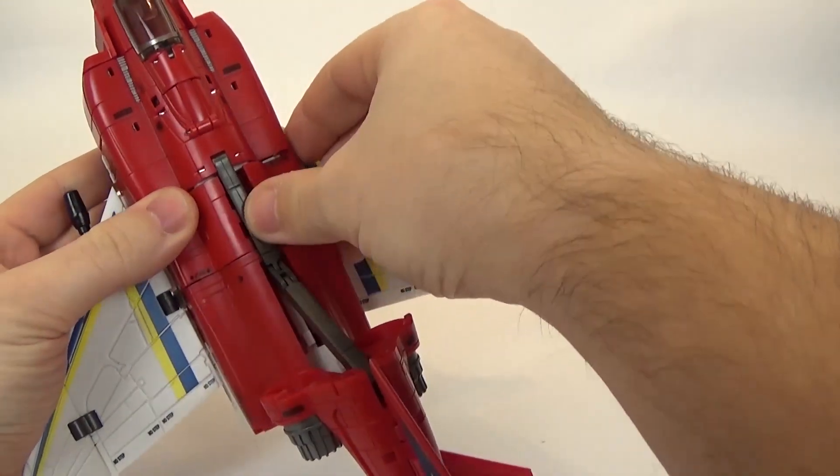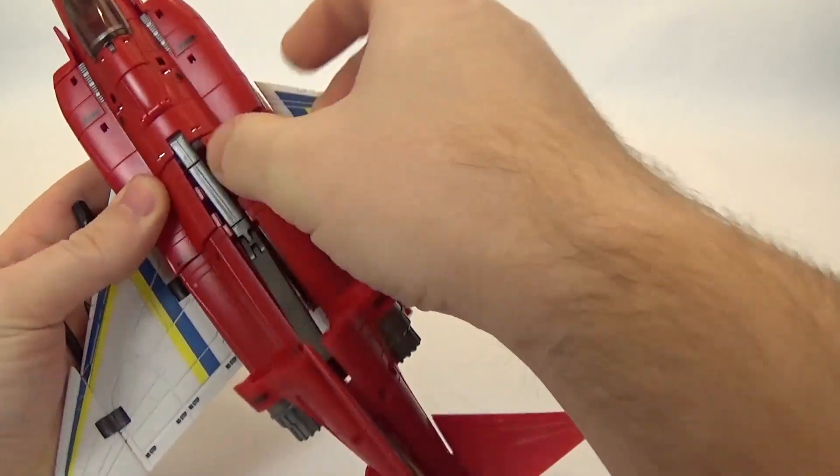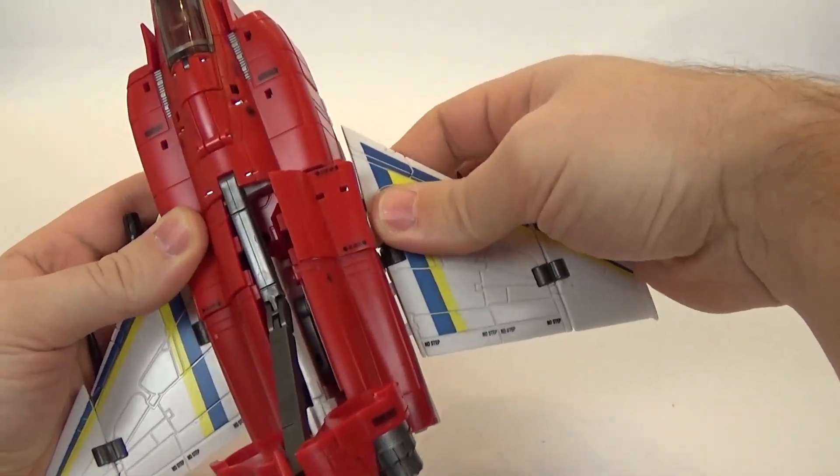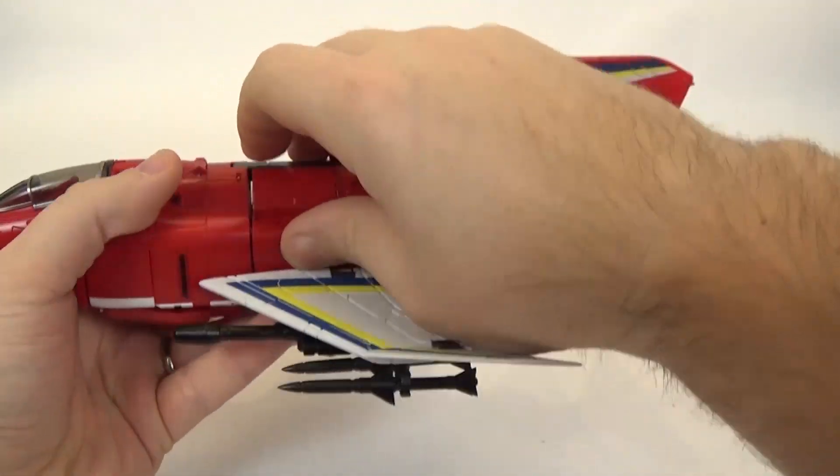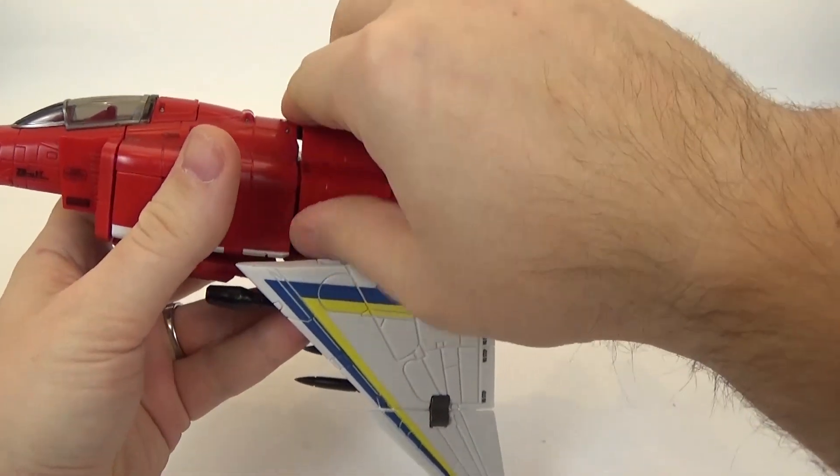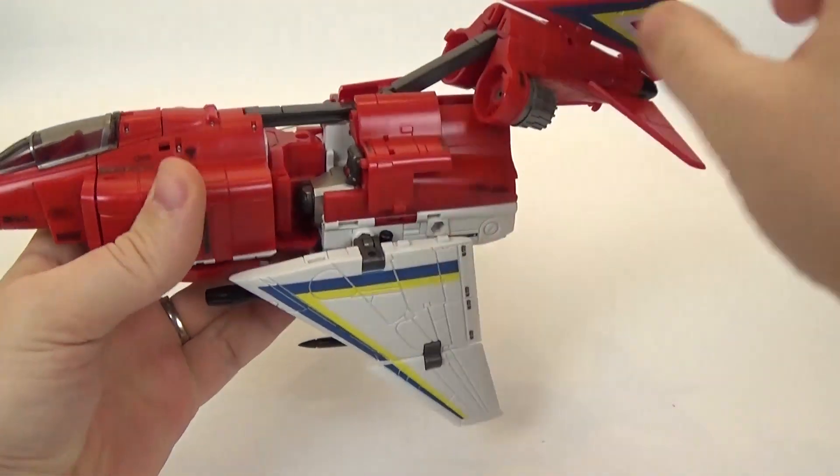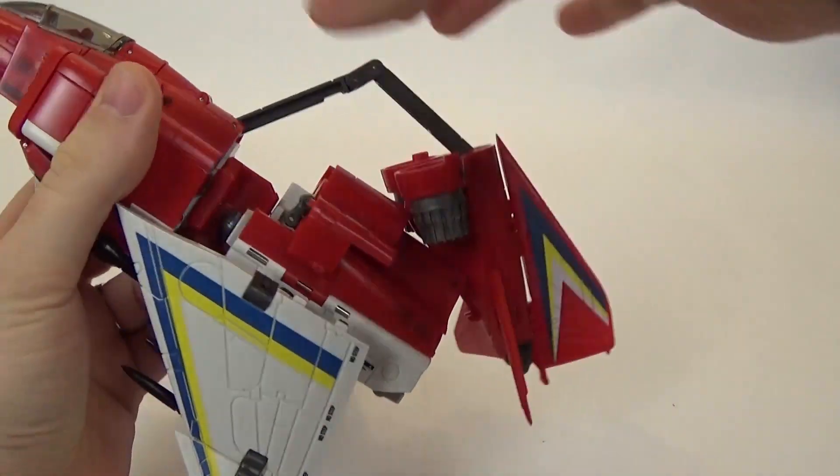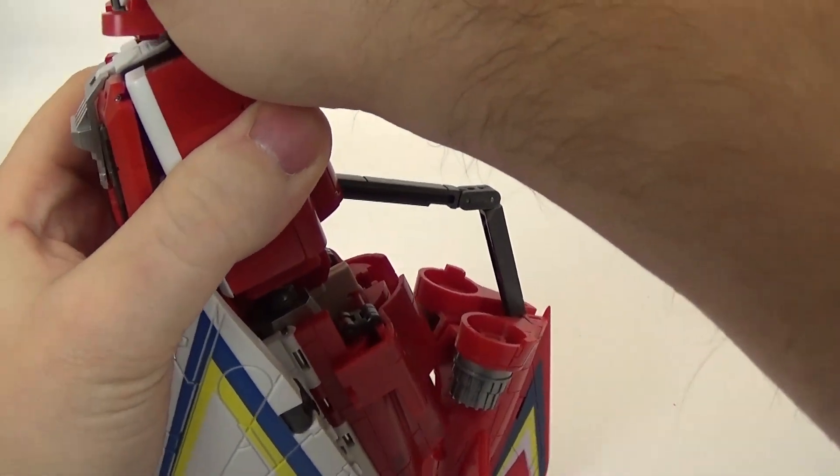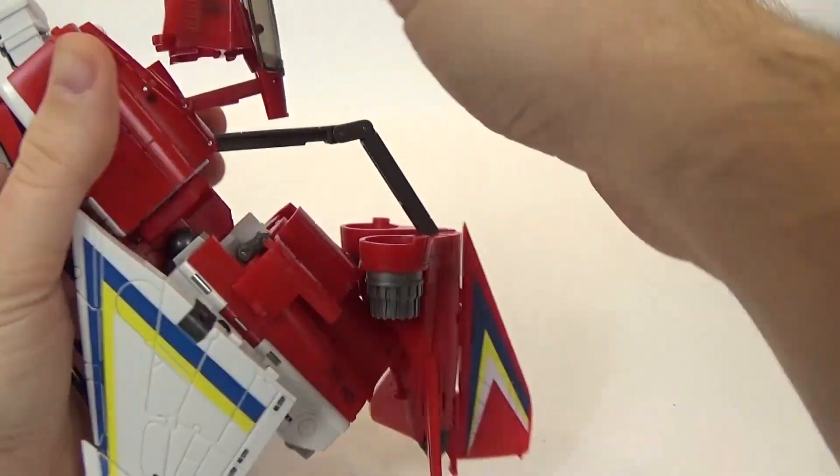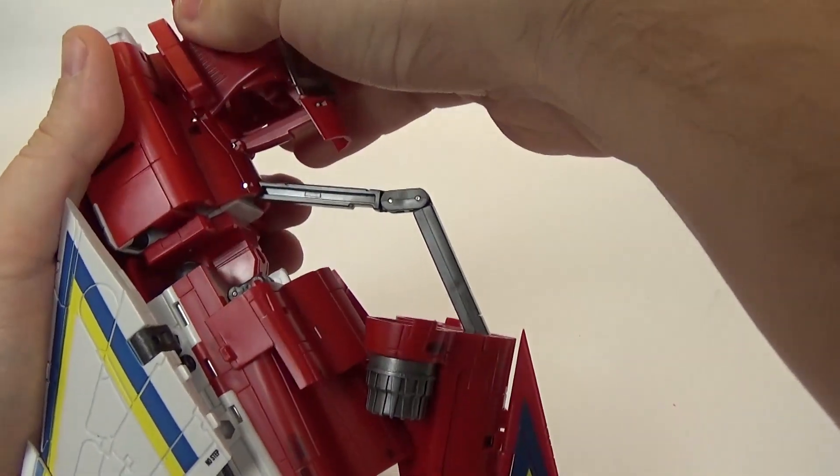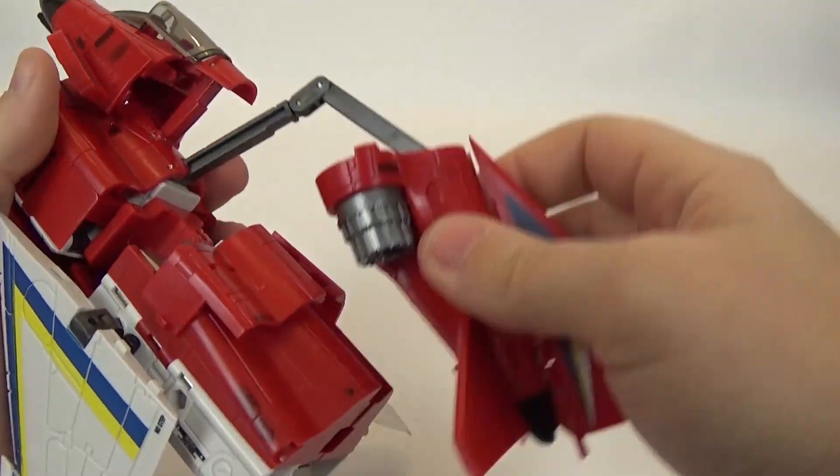So, what we're going to do is we're going to act like we're going back to robot mode. And, then we're going to pop these panels on the sides down. Just like that. Pop this panel down. Just like that.